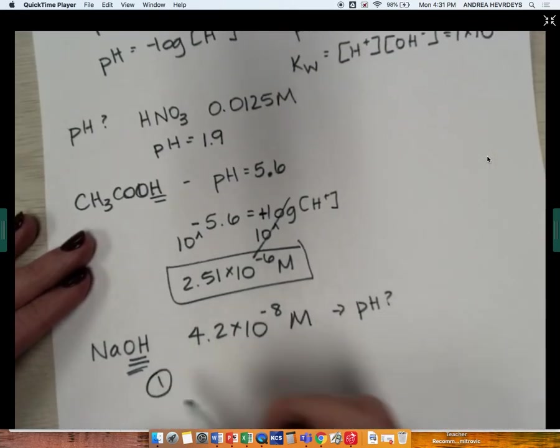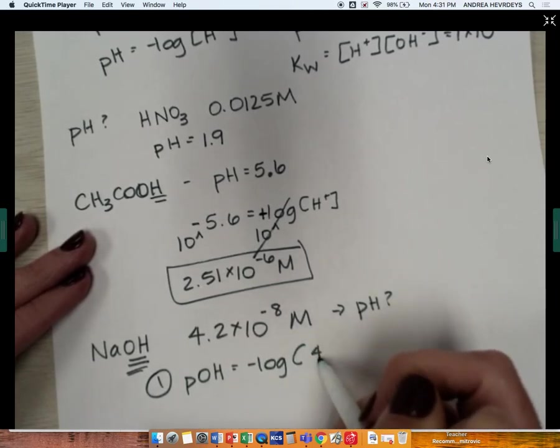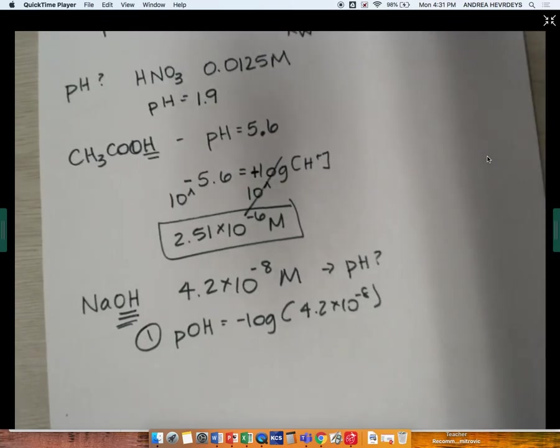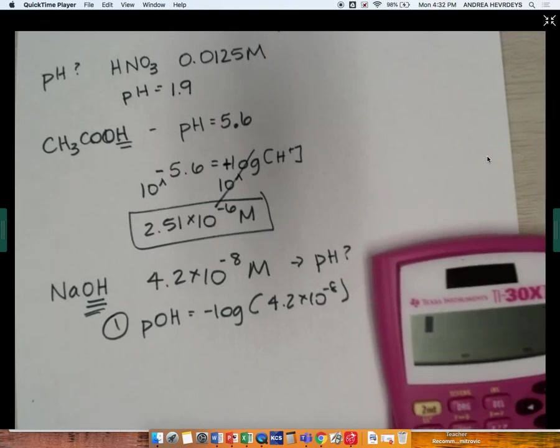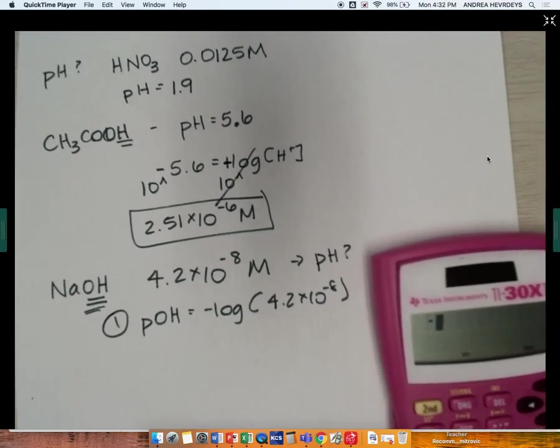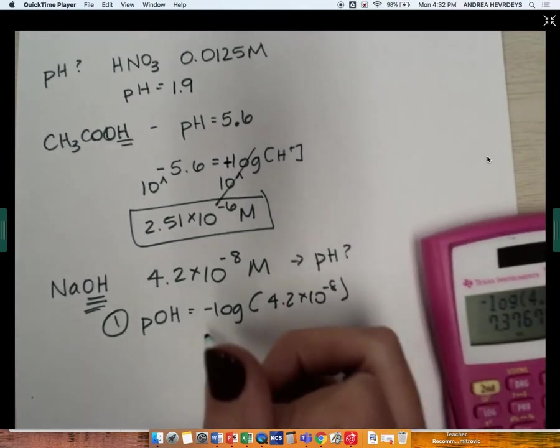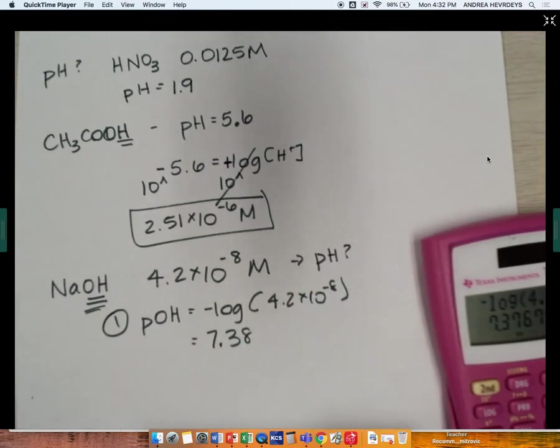So if I first do pOH is the negative log of that hydroxide ion concentration, again, don't let these logs scare you. This isn't algebra class. All you have to do is type in the negative sign. You're going to type in the log button, and then you're going to type in 4.2 times 10 to the negative 8th, and we get 7.38 as my pOH.